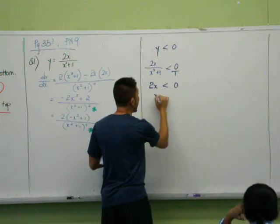Please write this way. After this step, what do we do? We simplify the top. Two x squared minus four x squared — you get negative two x squared plus two.